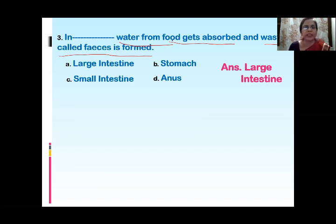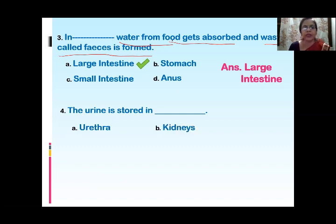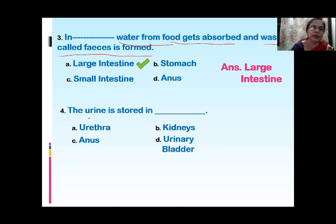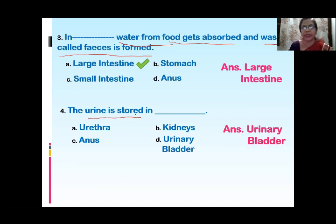The next question: Urine is stored in — option one, urethra; second, kidneys; third, anus; and fourth, urinary bladder. Do you remember where urine is stored? It is stored in the urinary bladder.